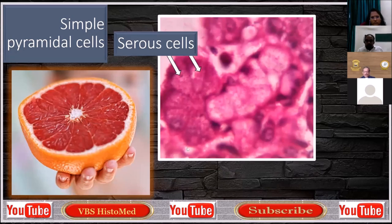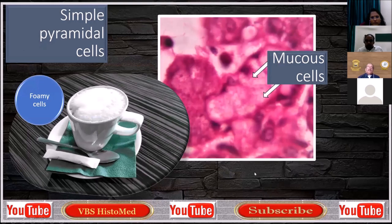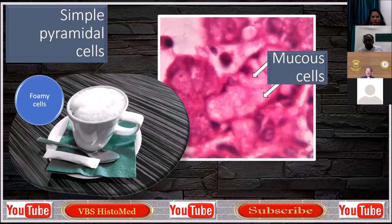Serous cells — you can see they are uniformly eosinophilic stained and there are granules, same as in a cross-section of a citrus fruit. This is one of the most interesting slides. I've always had a problem telling my students what exactly is the meaning of foamy cells. We know why it is foamy because alcohol has washed out the mucus material in the granules. As a result, it presents a ghostly or whitish appearance.